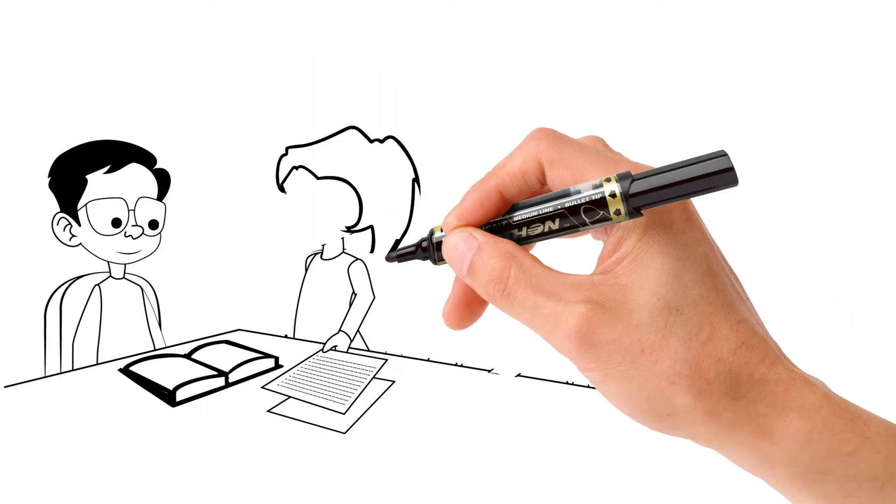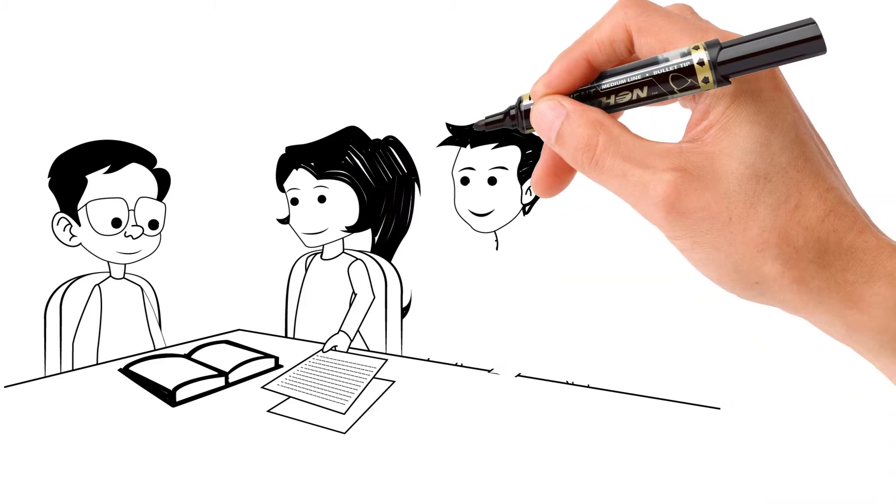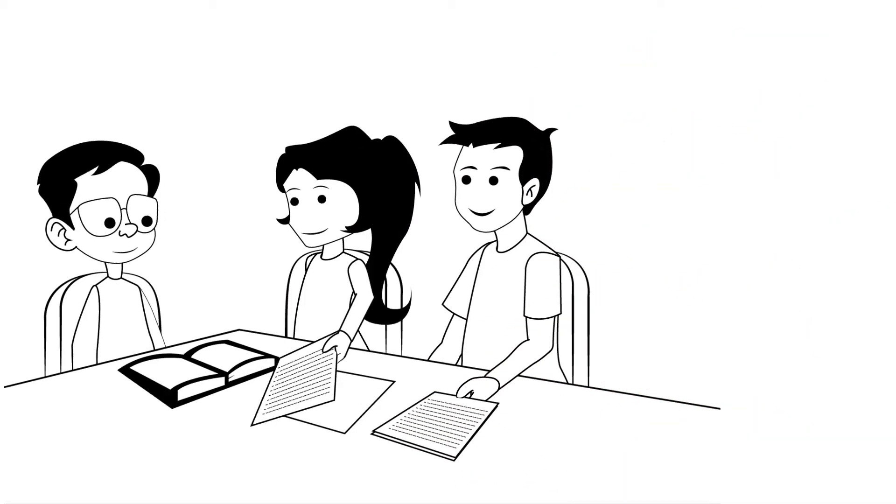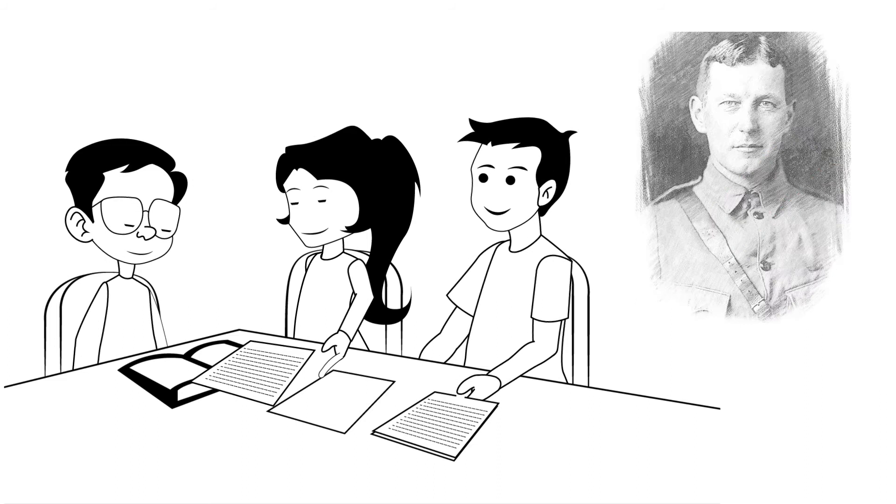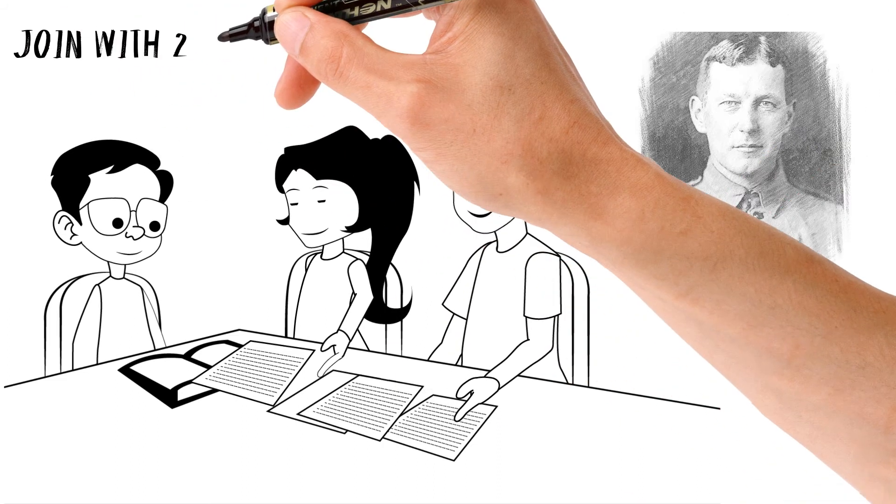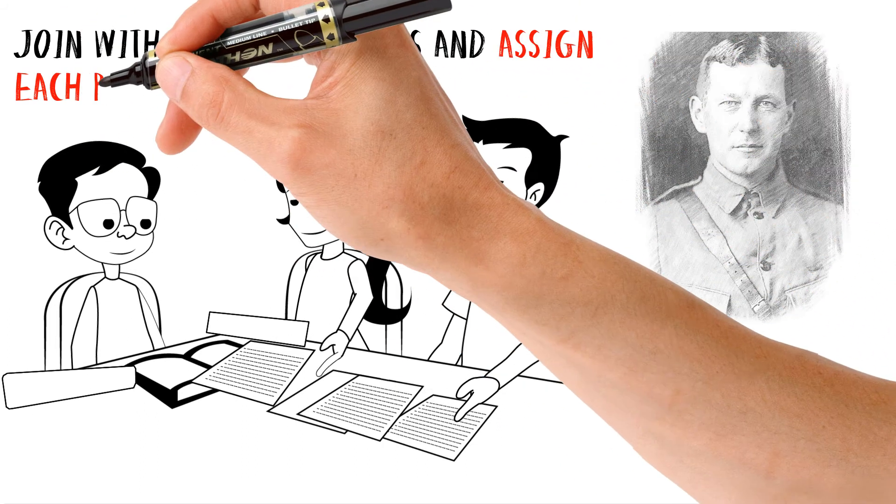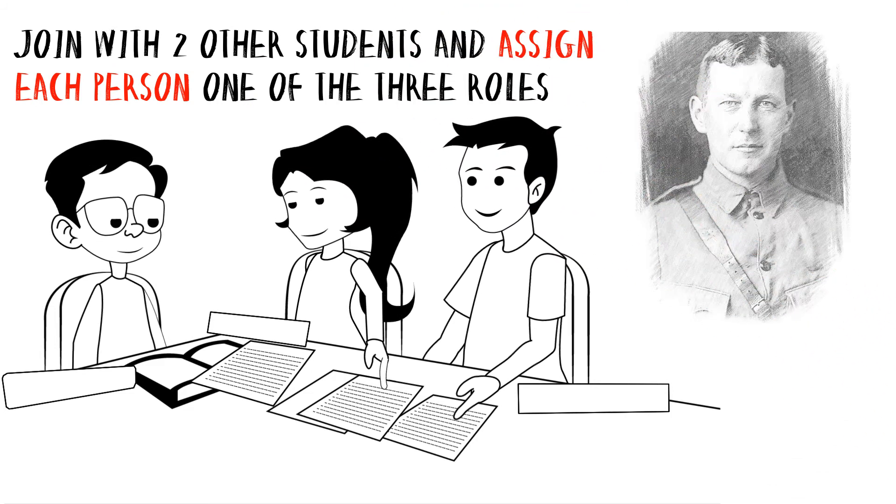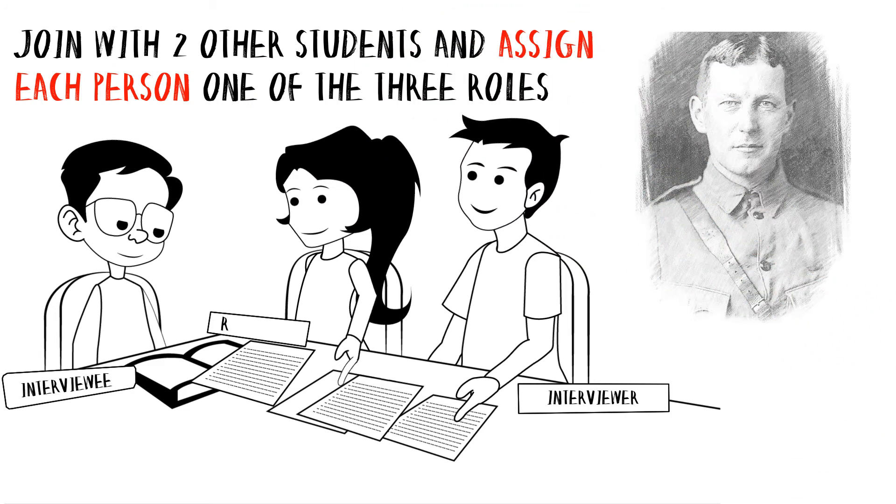Let's say you're studying World War I and are using three-step interview to review your research on a historical figure, like John McRae, the author of In Flanders Fields. Join two other students and assign each person one of the three roles: interviewer, interviewee, or reporter.